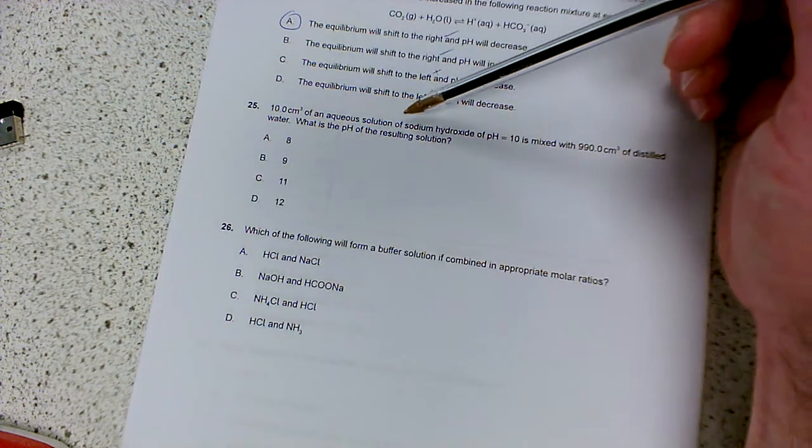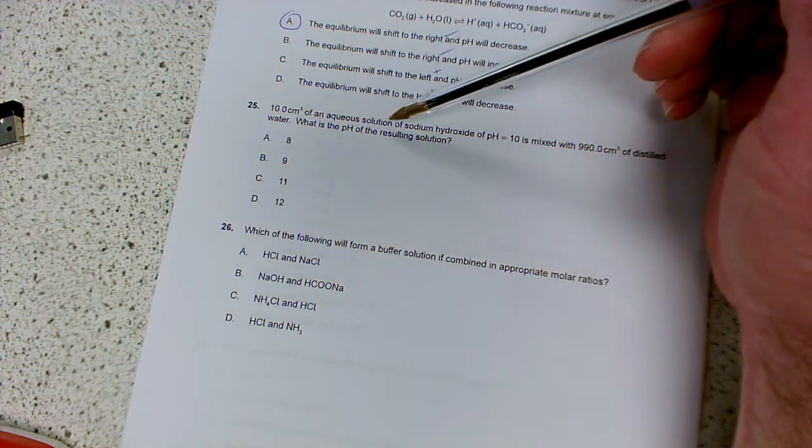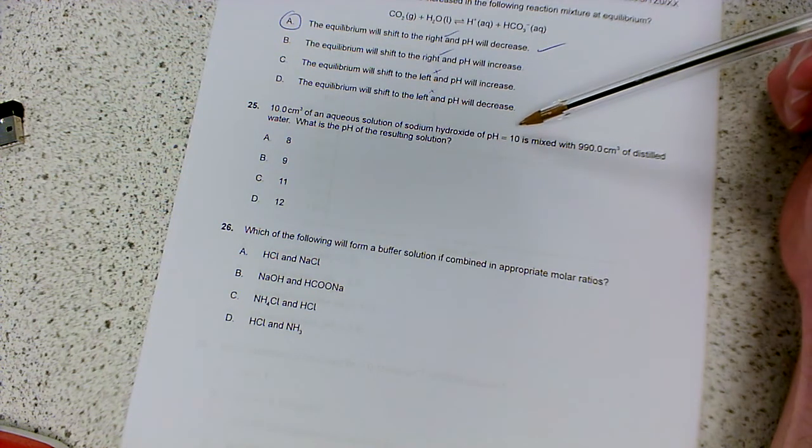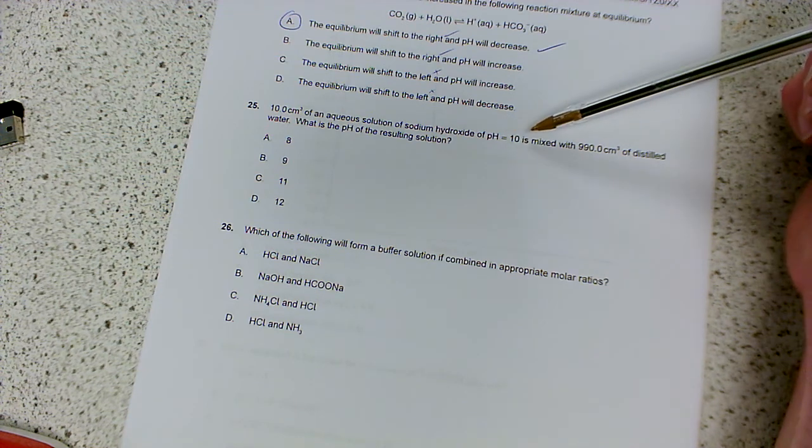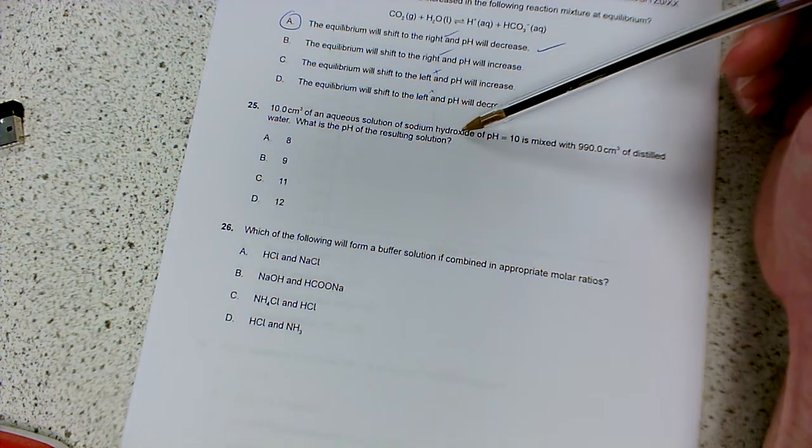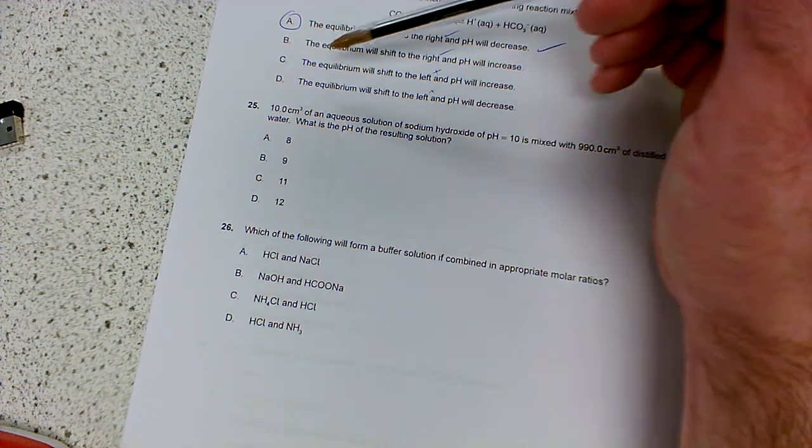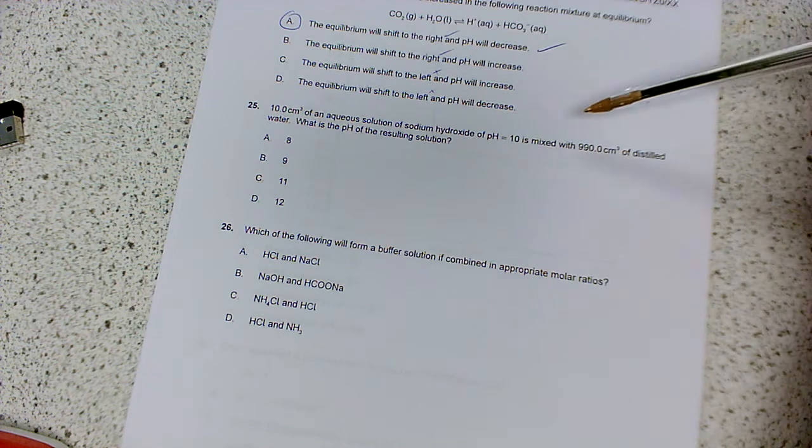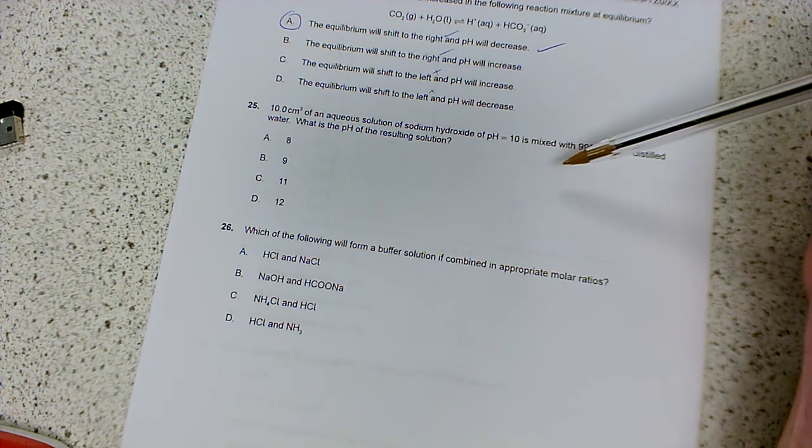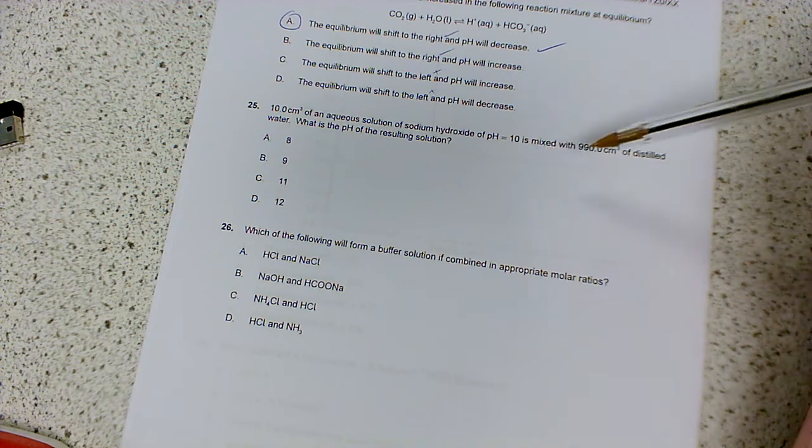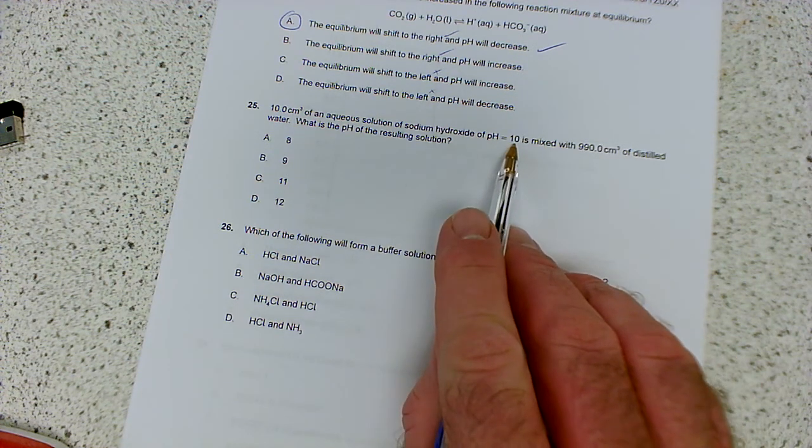So 10 centimeters cubed of an aqueous solution of sodium hydroxide of pH 10 is mixed with 990 centimeters cubed of distilled water. What is the pH? Well, remember, a change in concentration of times 10 is a difference of 1 pH unit. So if we go from 10 centimeters cubed of this alkali and dilute it to effectively a thousand centimeters cubed, because 990 plus 10 is a thousand centimeters cubed, that's a hundredfold dilution. Of course, it's not going to go up. It's not going to become more alkaline by diluting with water.